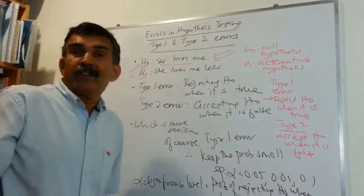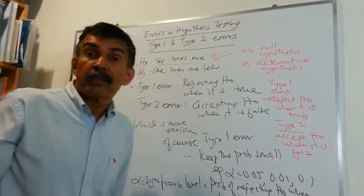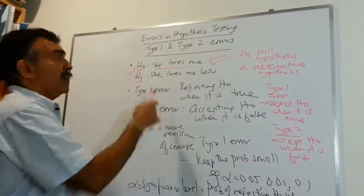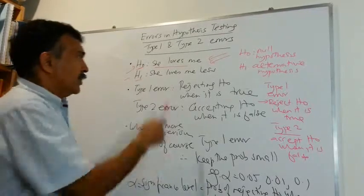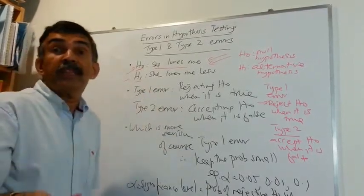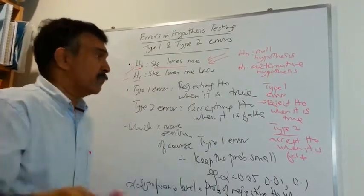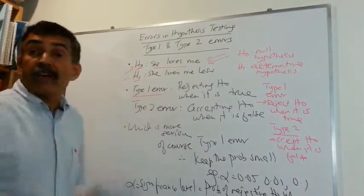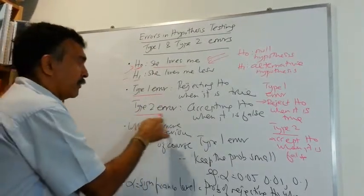Suddenly, I find, hey, she doesn't call me as often. She doesn't call me as often. So what's going on? So H1, she loves me less. So now we have to deal with the Type 1 error idea. I have defined Type 1 error here for you and Type 2 error for you.